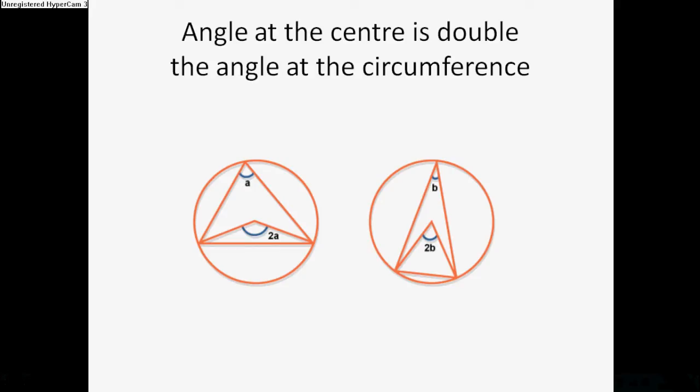Angle at the centre is double the angle at the circumference. Pretty simple this one. You've got b, this would be 2b, a, this would be 2a. That's what we really need to say about it.